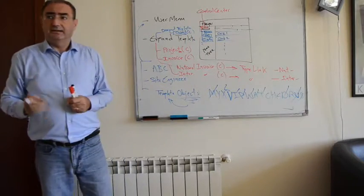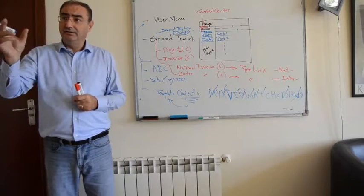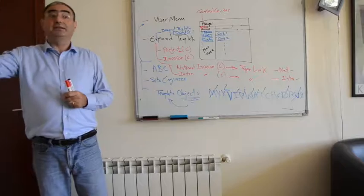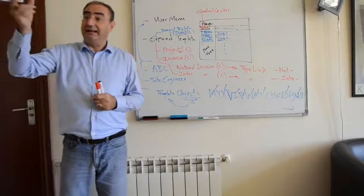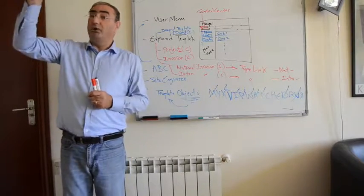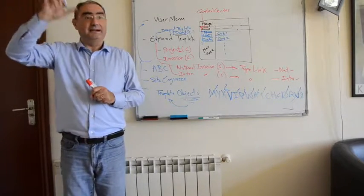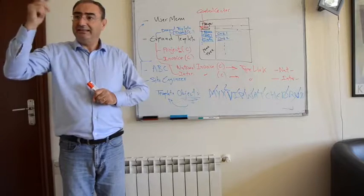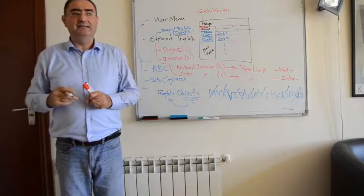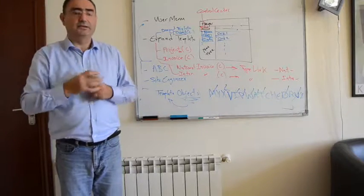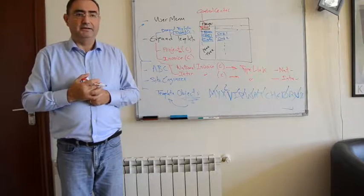The naming convention, as we said, is always singular — very close to the type if it's related to the type, close to the object if it's related to the object, and it has a C at the end so we know it's a config template.